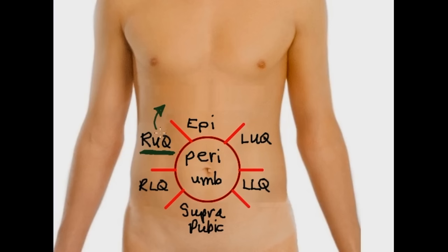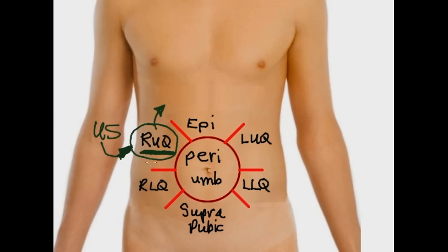Also think about subdiaphragmatic abscess, or even pneumonia or empyema being referred down from the lung. Right upper quadrant is very important because of the liver and gallbladder. Think about getting an ultrasound — that's usually going to show you best if you've got right upper quadrant pain. An ultrasound looks at those structures even better than a CT scan, typically.